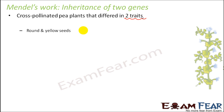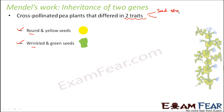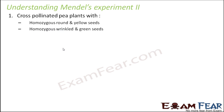For this dihybrid cross, Mendel took round and yellow seeds and crossed them with wrinkled and green seeds. The two traits he considered were seed shape — round versus wrinkled — and seed color — yellow versus green. He crossed the round and yellow seeds with the wrinkled and green seeds.